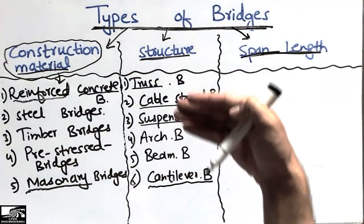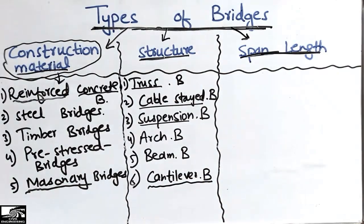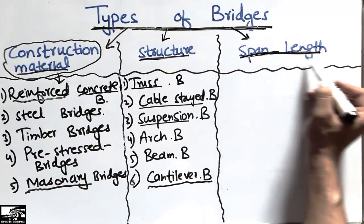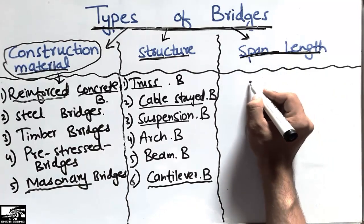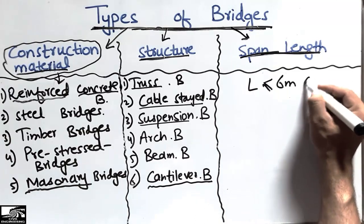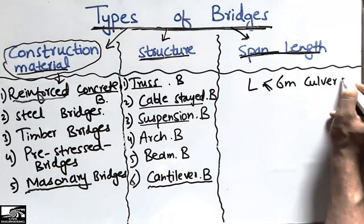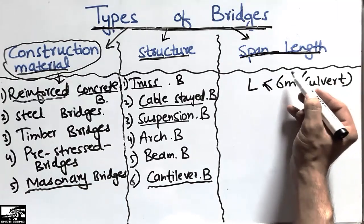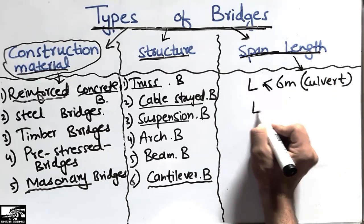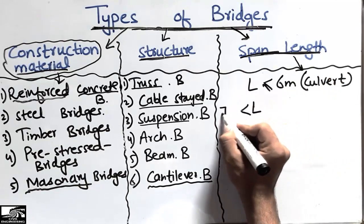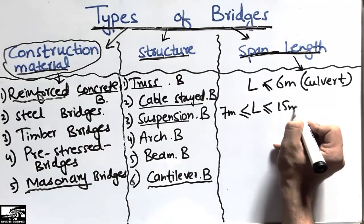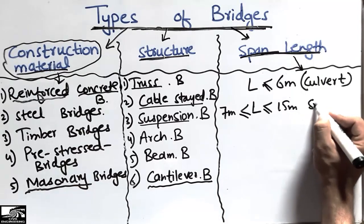Coming to the span length — the types of bridges classified according to span length. When the length of the bridge is less than or equal to six meters, we call it a culvert. When the length of the bridge is greater than seven meters and less than or equal to 15 meters, we call it a small span bridge.